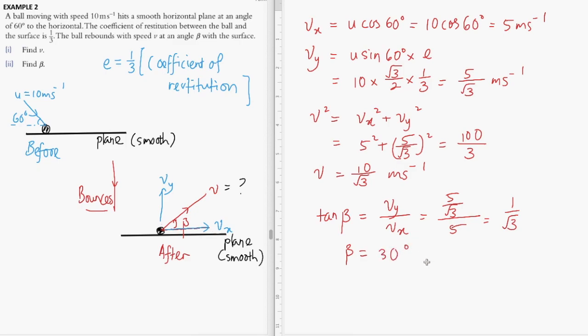Therefore, we can conclude that the ball rebounds at an angle of 30 degrees to the horizontal with a speed of 10/√3 meters per second.